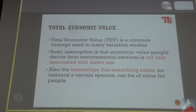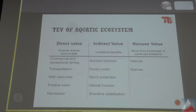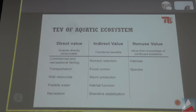The idea is that the value of a public environmental good like a landscape consists of different components. We can see this better with an example for aquatic ecosystems on this slide. The total economic value can comprise three different types: direct values on the left side — for example, timber from forests or drinkable water or other wild resources that can directly be sold on the market, and for those we have prices that tell us their value.